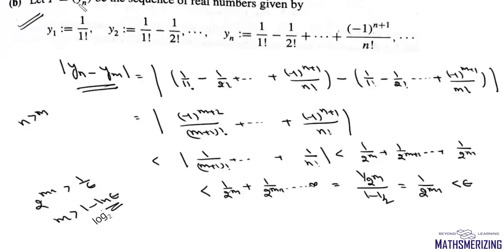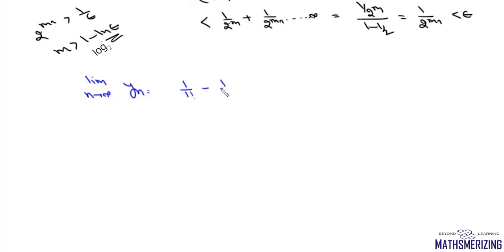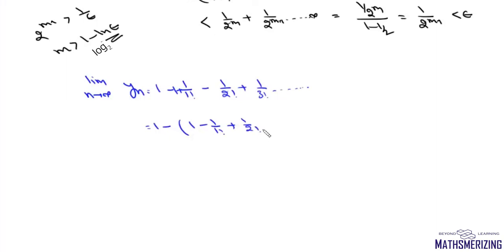Now we find the limit of the sequence. We can write limit as n tends to infinity of yn, which equals 1 upon factorial 1 minus 1 upon factorial 2 plus 1 upon factorial 2, continuing the series. This is nothing but the expansion of e to the power minus 1. So the limiting value is simply 1 minus 1 upon e, and the sequence converges to 1 minus 1/e.